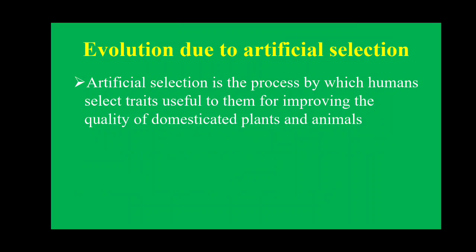The next topic is evolution due to artificial selection. In this, humans artificially select desired characters and do manipulation in a species, resulting in a new species being formed. Artificial selection is the process by which humans select traits — characters — useful to them for improving the quality of domesticated plants and animals. The new species formed is not from natural means but because of artificial selection.